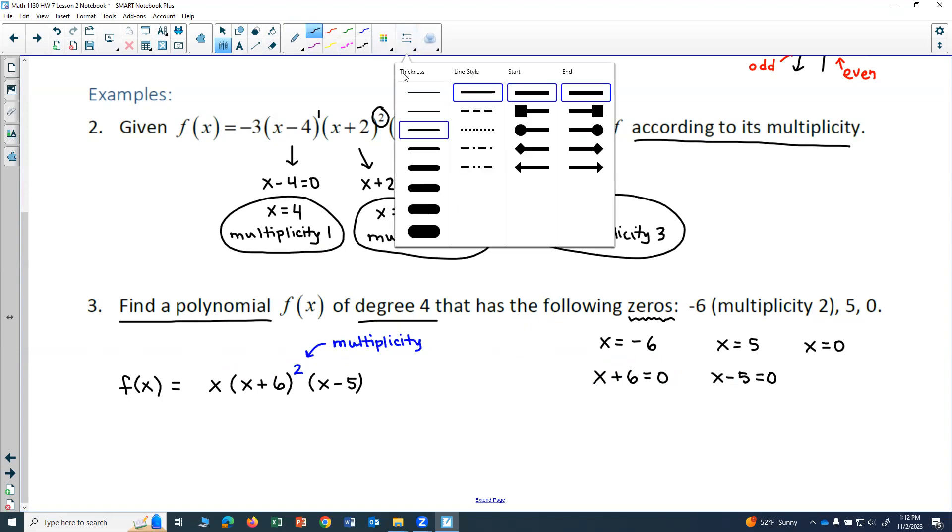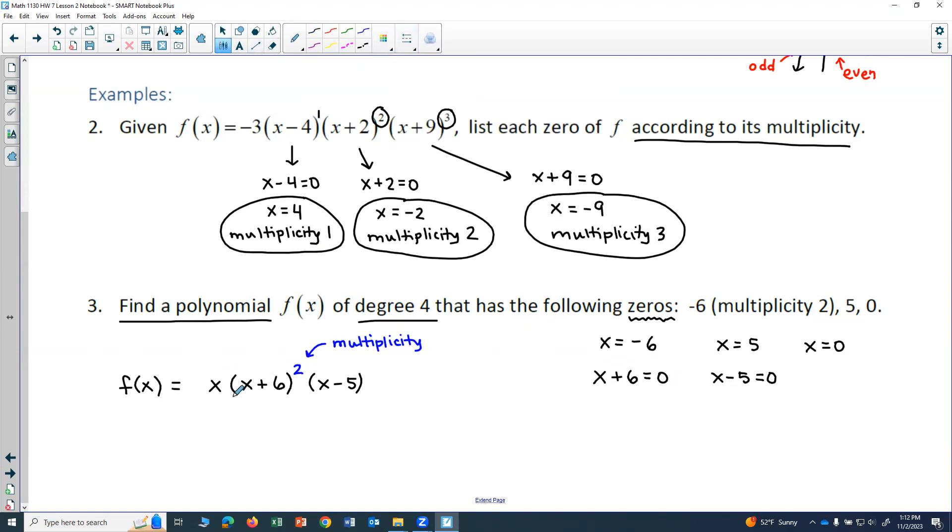I have the correct degree because if I looked at how many factors of x I have, this is one factor of x. This x plus 6 squared, actually the leading term of that would be x squared. So I have x and x squared and another x.